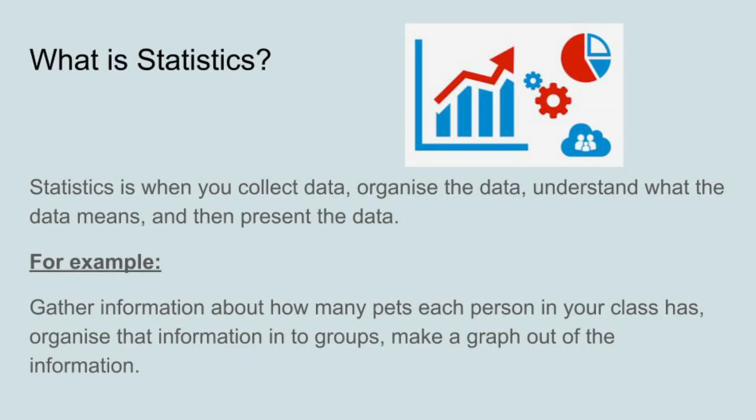You need to gather information about how many pets each person in your class has, and then you organize that information into groups, and then you make a graph out of the information. You may have done this before — perhaps you've counted Smarties or M&M colors, or maybe you looked at cars that drove past the school. If you want another statistics video after this one, I made one in London where I stood on a bridge and counted different colored vehicles and turned that into a graph.